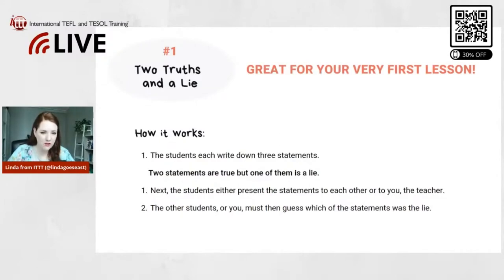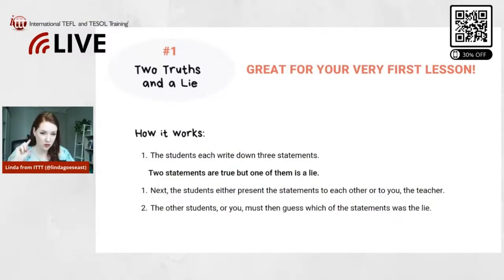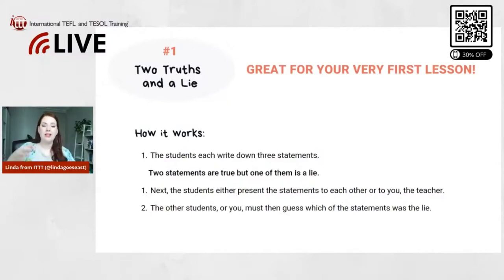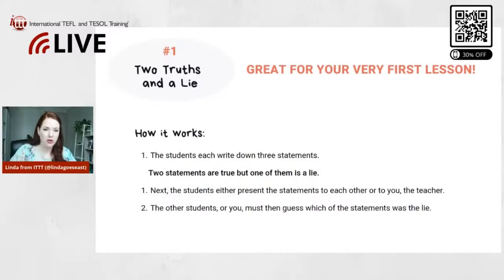Here's how the game works: first, the students each write down three statements — two need to be true and one has to be a lie. Next, the students either present the statements to each other, to the class, to you, or to everyone, depending on how you want to play it. Then the other students or you need to guess which statement is the lie.